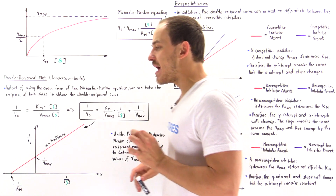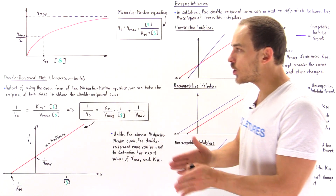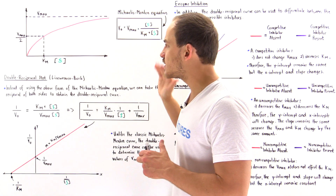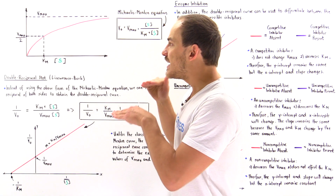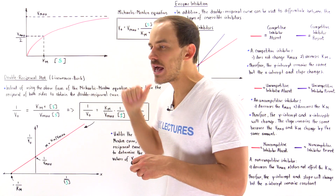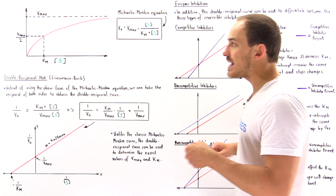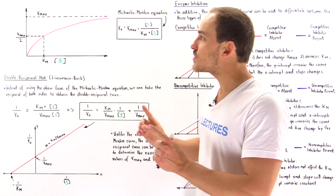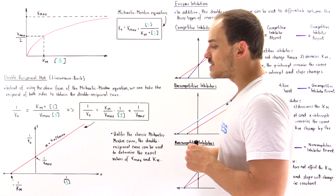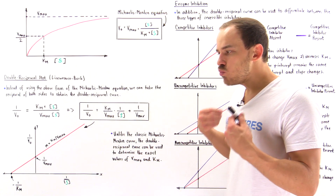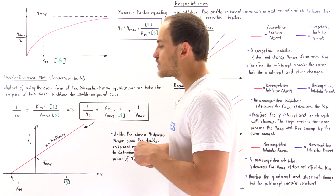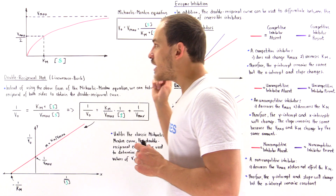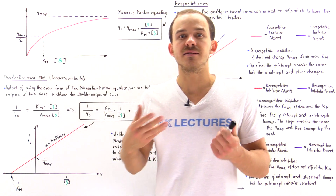The curve approaching Vmax asymptotically means that every single time we increase the substrate concentration, the red curve gets closer and closer to the Vmax value, but it never quite reaches it. That's problematic because we want to be able to calculate what Vmax actually is. And if we can't calculate Vmax, then we cannot calculate the Km value — the Michaelis constant.